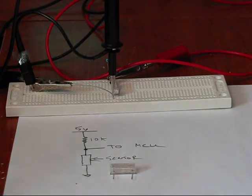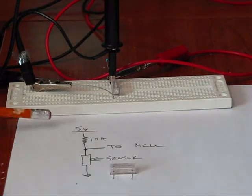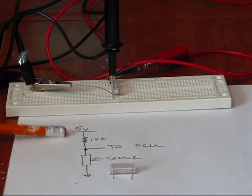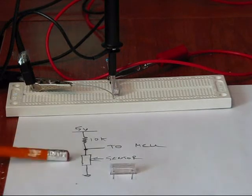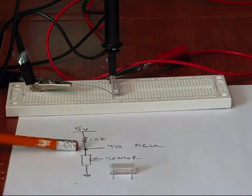So this little fella is our new vibration sensor. Here's the test circuit that I have set up right now. We've got a 5-volt source, 10K protective resistor, our vibration sensor, and we're measuring right here.